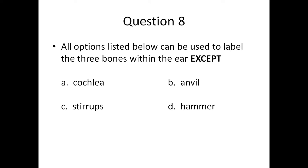Question eight: All options listed below can be used to label the three bones within the ear except: A: The cochlea, B: Anvil, C: Stirrups, or D: Hammer.